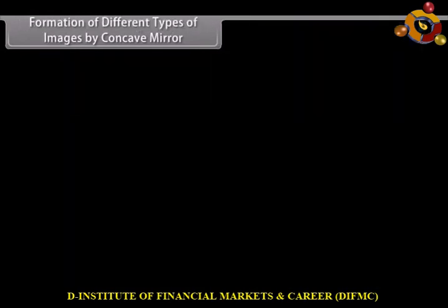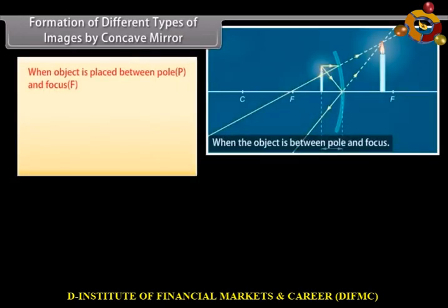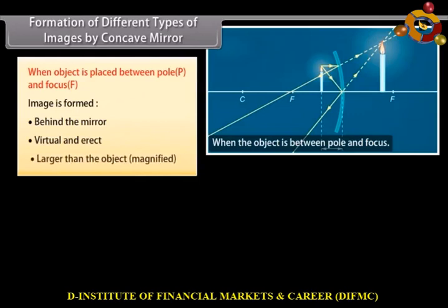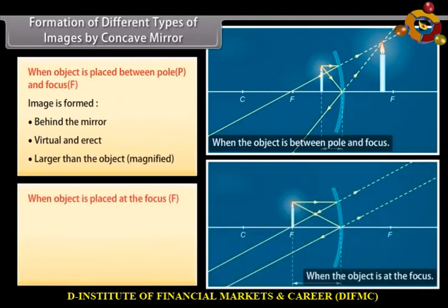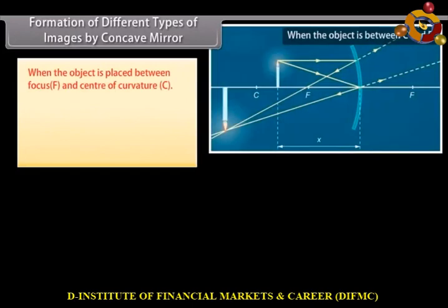Formation of different types of images by concave mirror. When the object is placed between pole P and focus F, the image is formed behind the mirror — virtual, erect, and larger than the object (magnified). When the object is placed at the focus F, the image is formed at infinity — real, inverted, and highly enlarged. When the object is placed between focus F and the center of curvature C, the image is formed beyond the center of curvature — real and inverted.